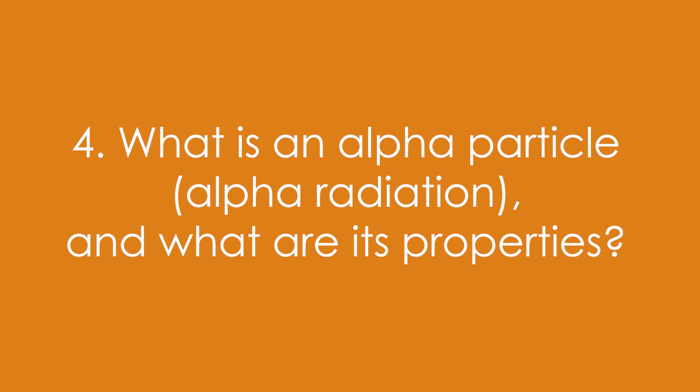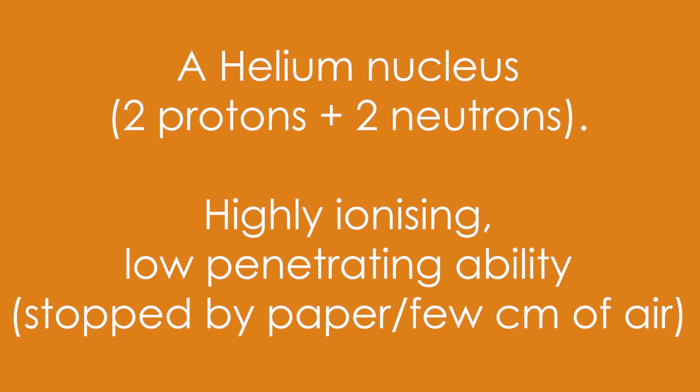4. What is an alpha particle, and what are its properties? It's a helium nucleus, or two protons and two neutrons. It's highly ionising, and it has a low penetrating ability, it's stopped by a piece of paper, or a few centimeters of air.